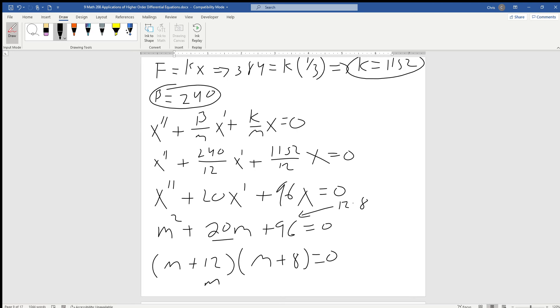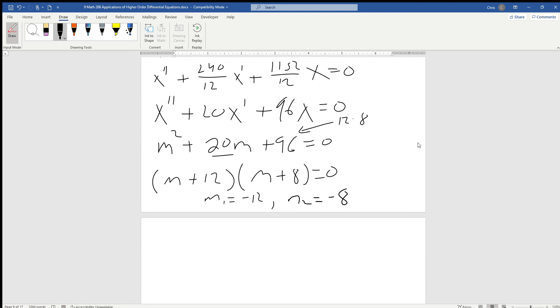It factors into m plus 12 times m plus 8 equals 0. We get a case 1 where m1 is negative 12 and m2 is negative 8. So we end up with a general solution: x at t equals c1 e to the minus 12t plus c2 e to the minus 8t.